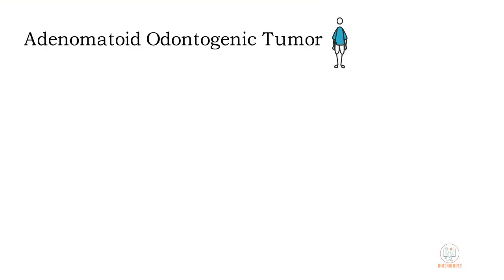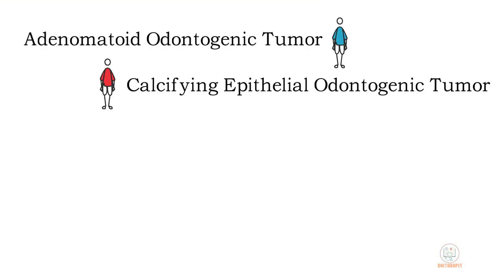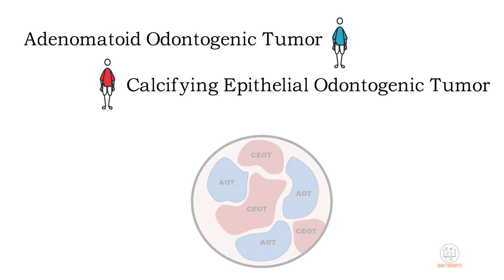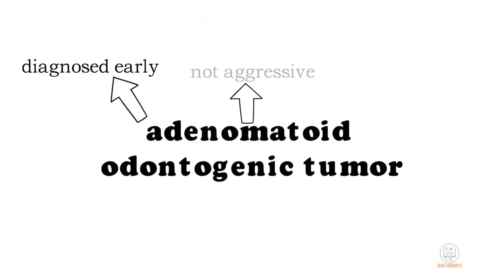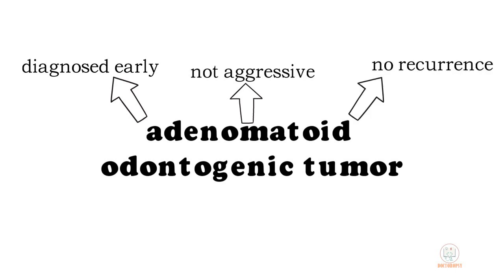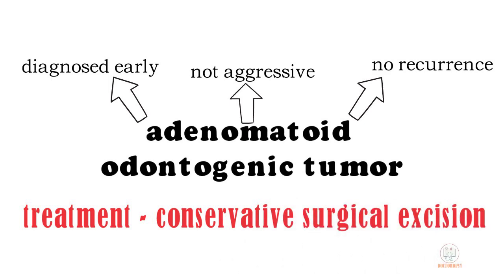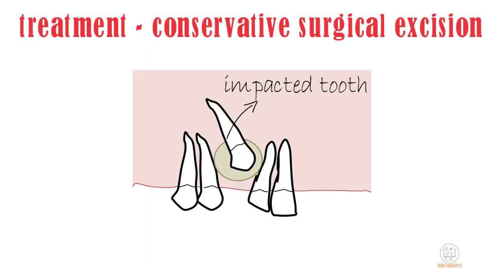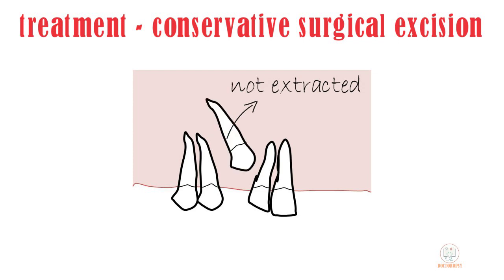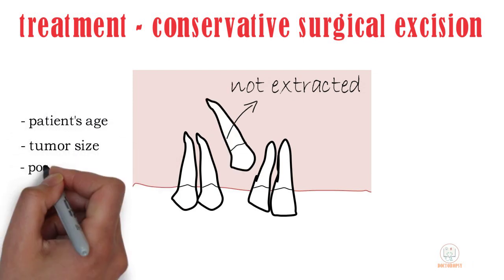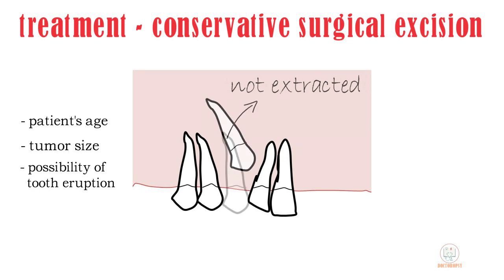Combined lesions of adenomatoid odontogenic tumor and calcifying epithelial odontogenic tumor have been reported, where histologically both tumors are seen together. AOTs are diagnosed at an early age, are not aggressive, and rarely show recurrence; thus they are treated by conservative surgical excision. The associated impacted tooth may or may not be extracted depending on the patient's age, tumor size, and the possibility of the tooth to erupt.